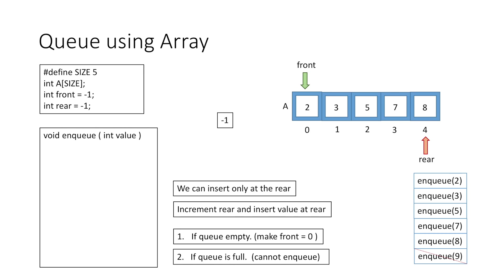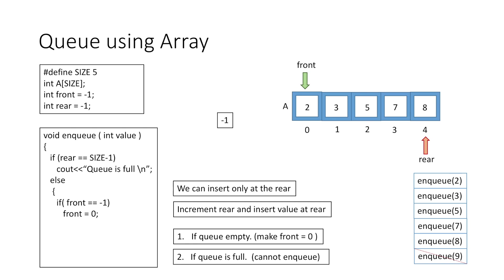Taking all this into consideration, let's write our enqueue function. First we check if rear is equal to size-1, meaning the queue is full, and we print that we cannot insert any more elements. Else if we are inserting the first element, that is front equals -1, we make front equal to 0. Then we increment rear and insert the value at rear. With this we have successfully implemented our enqueue function.